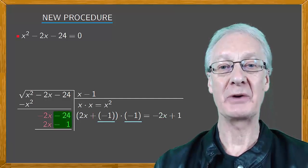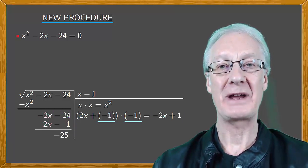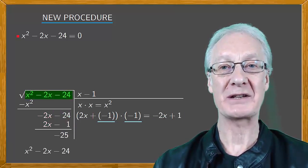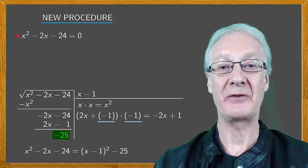Subtracting leaves us with minus 25. So we have that x squared minus 2x minus 24 is equal to x minus 1 squared plus the remainder, which is minus 25.